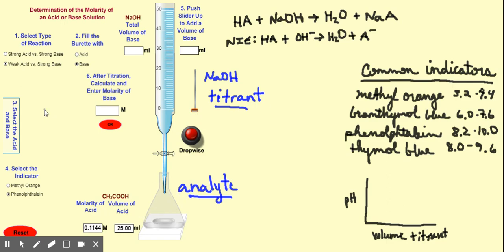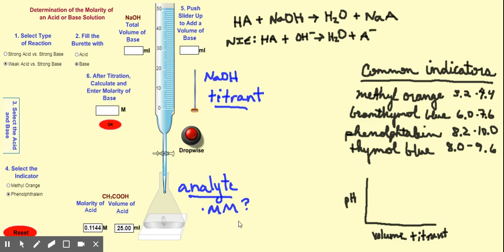What I have present as my analyte in this simulation is a weak acid — specifically acetic acid — and this is actually what we'll be doing in our lab: acetic acid in the flask and sodium hydroxide in the burette. One thing you could potentially find about the analyte is its molar mass. You could have the acetic acid in solid form, dissolve it in water, and figure out the molar mass or identity of that analyte.